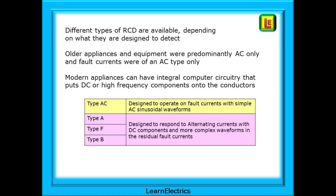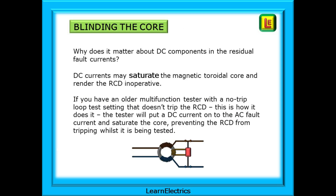Different types of RCD are available depending on what they are designed to detect. Older appliances were predominantly AC only, and fault currents were of an AC type only. But modern appliances can have built-in computer circuitry that puts DC or high-frequency components onto the conductors. The older type AC device is ideally suited to circuits with only smooth sinusoidal AC fault currents, while types A, F, and B are for circuits where modern equipment can overlay DC and high-frequency components onto any fault currents. DC components matter because they can saturate the magnetic toroidal core — known as blinding — and render the RCD inoperative, meaning it may not operate during a genuine fault.